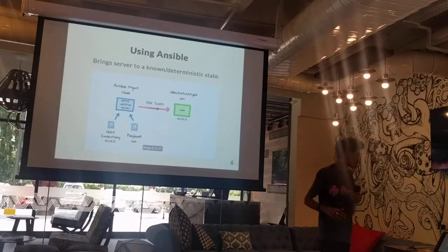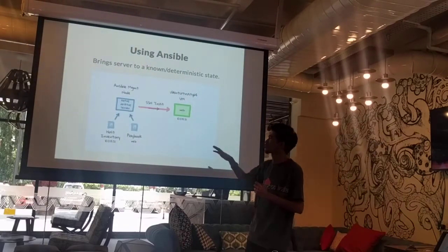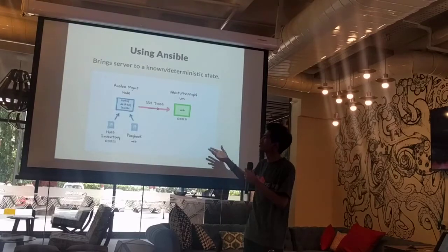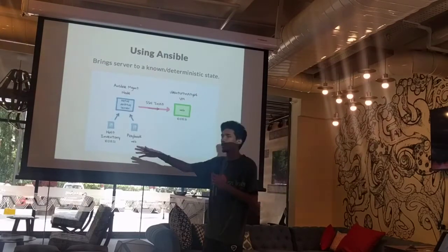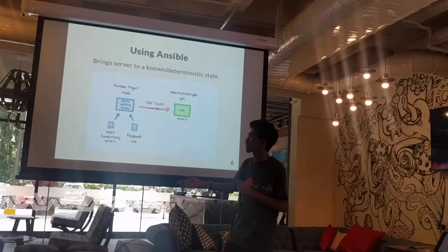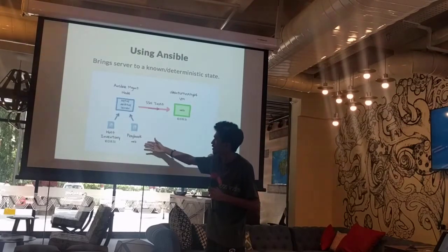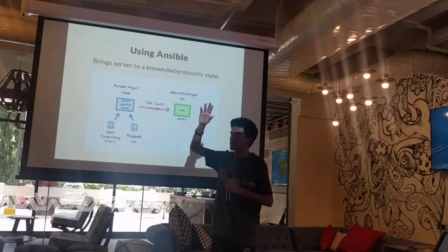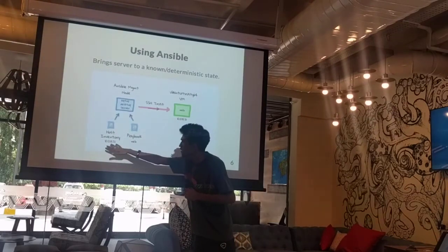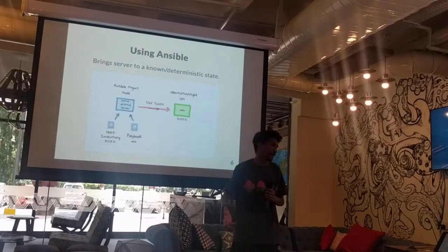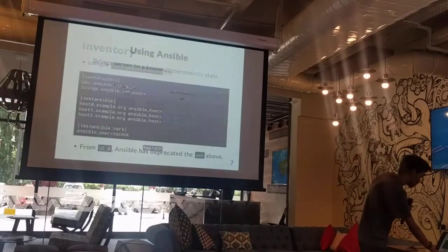This would be a very rough architecture of that simple example. It just requires at minimum two basic configuration files: one would be the host inventory, and the other would be the YAML config in which you would be specifying the tasks. The host inventory would just hold the IP address of the server and a whole lot of things.